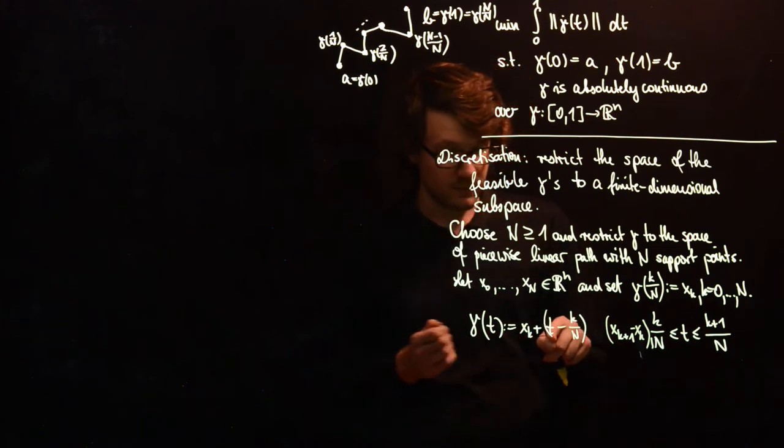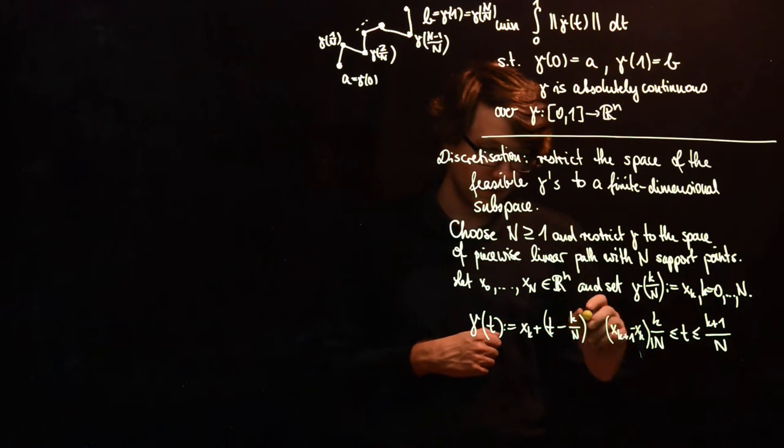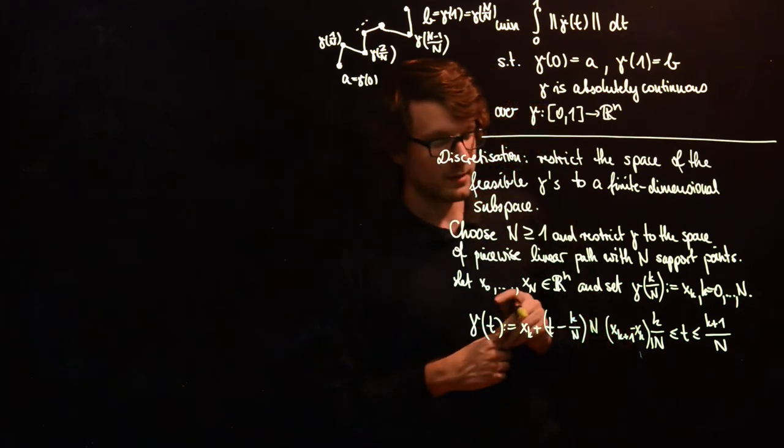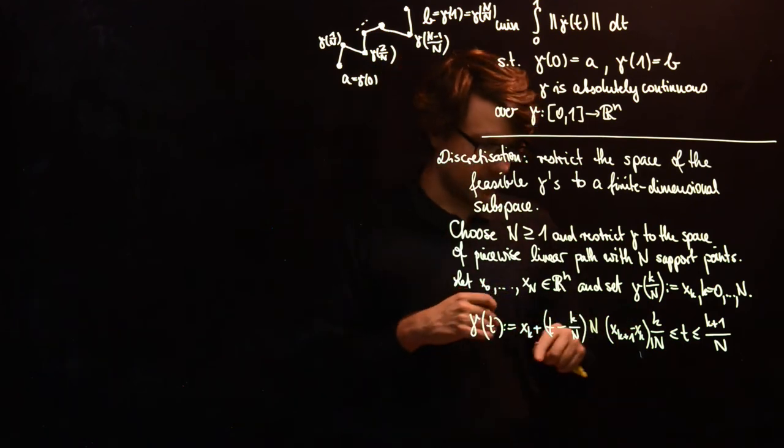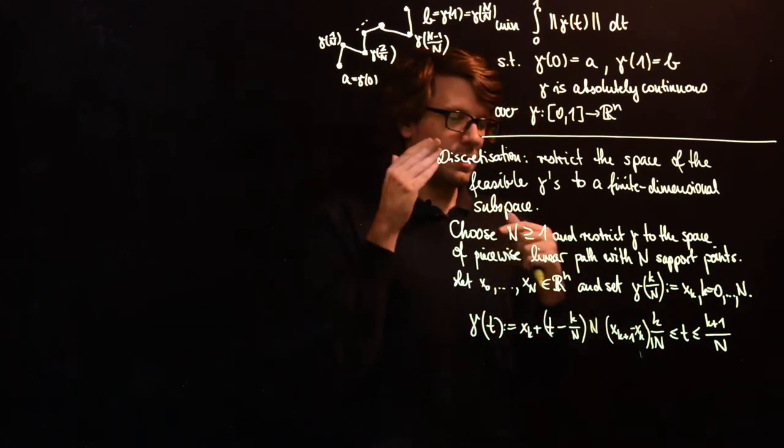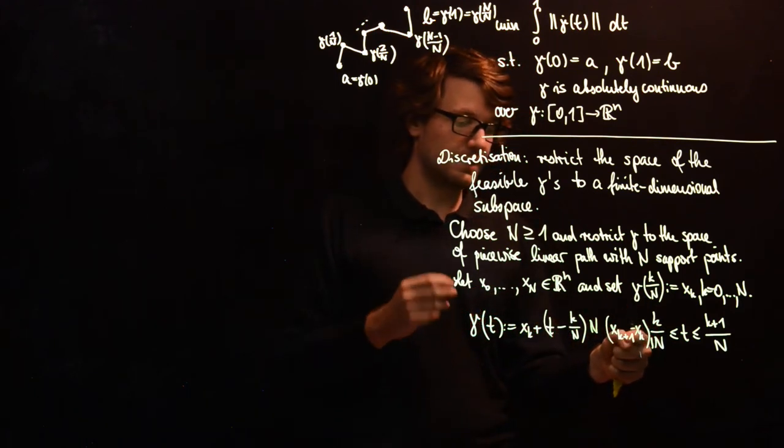So if t is equal to K plus 1 over N, then we have K plus 1 over N minus K over N which is 1 over N, so we have to multiply with an additional capital N here. And we see this expression is linear in K, so this is a linear interpolation between those two points xK and xK plus 1.